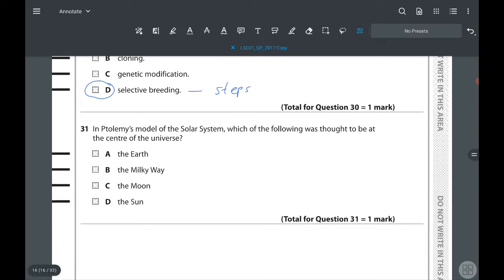30th question: turkey farmers have gradually increased the average size of turkeys. To do this they choose the heaviest female and male turkeys to breed from. This is an example of selective breeding, and you need to know the steps of selective breeding. 31: Ptolemy's model of the solar system. Once again this is not in the syllabus. The Ptolemy's model - he thought that the earth is at the center. So answer is A.